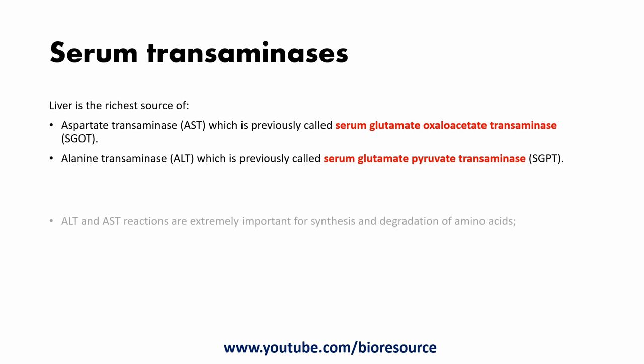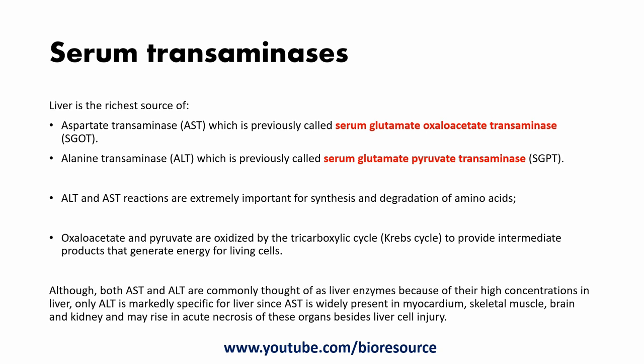The liver is the richest source of aspartate transaminase, which was previously called serum glutamate oxaloacetate transaminase or SGOT, and alanine transaminase or ALT, previously called serum glutamate pyruvate transaminase or SGPT. The ALT and AST reactions are extremely important for the synthesis and degradation of amino acids. The oxaloacetate and pyruvate are oxidized by the tricarboxylic acid cycle, or Krebs cycle, to provide intermediate products that generate energy for living cells.